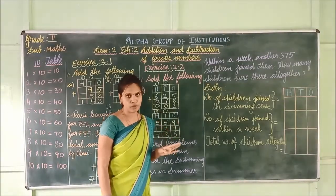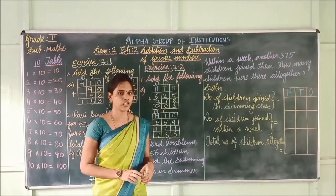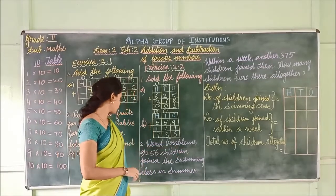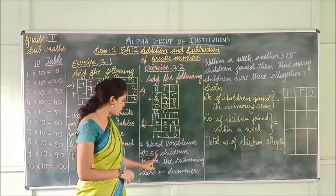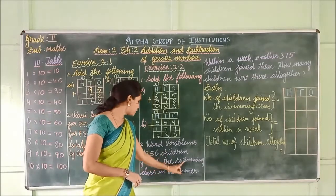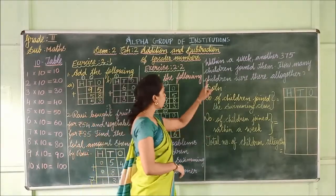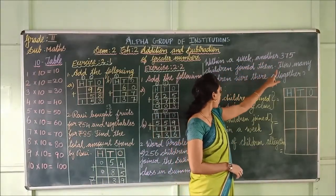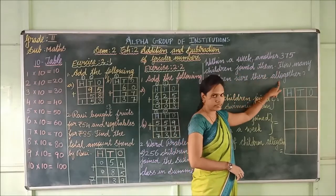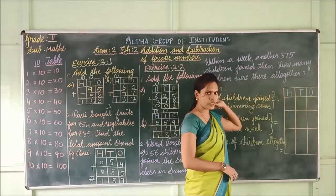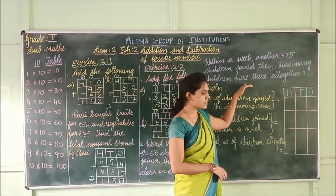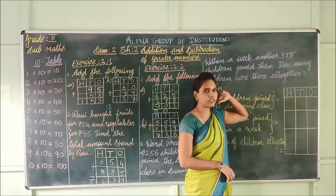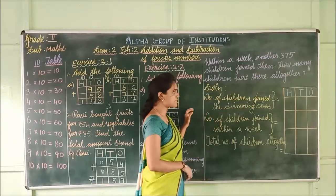Like this, you have to practice all the problems in your textbook. Now we move on to the word problem. See the question: 256 children joined the swimming class in summer. Within a week, another 375 children joined them. How many children were there all together? The keyword here is 'all together', which means you have to find the total — so it is obviously addition.